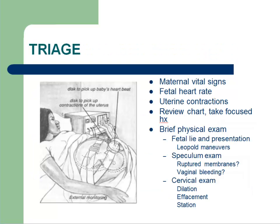The pregnant woman at term, which is defined as 37 weeks or beyond, who believes she is in labor should be evaluated in the triage area of an obstetric unit. Initial workup includes assessment of the maternal vital signs, fetal heart rate, and uterine contractions. If the patient and fetus are stable, proceed to reviewing the prenatal records and take a focused history, especially noting the gestational age of the fetus.